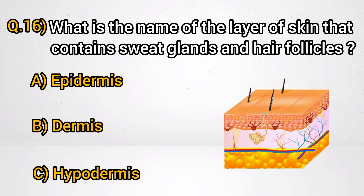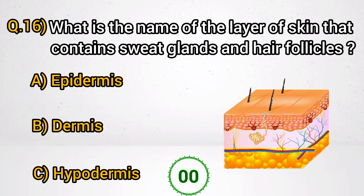Question 16: What is the name of the layer of skin that contains sweat glands and hair follicles? Answer B: Dermis.